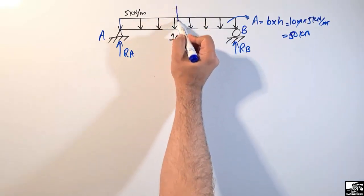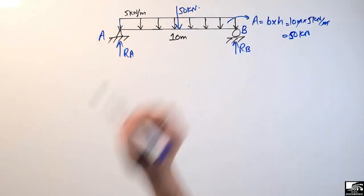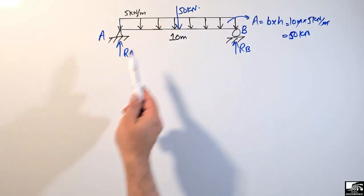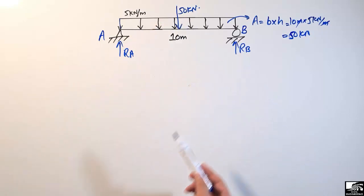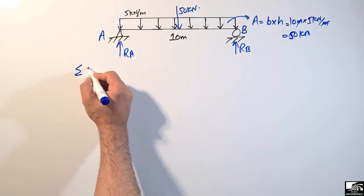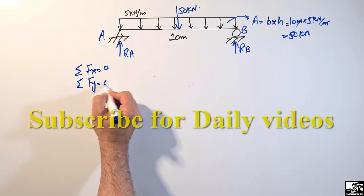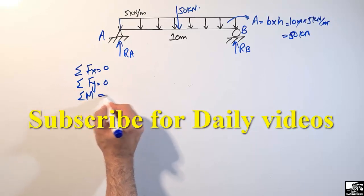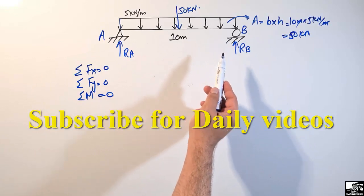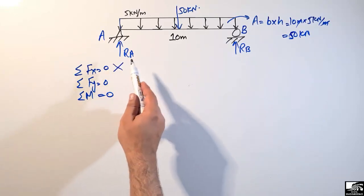The 50 kilonewton point load acts at the center of the beam. Now we can find the support reactions using equilibrium equations: summation of Fx equals zero, summation of Fy equals zero, and summation of moments equals zero. Since there is no horizontal load, we cannot use the Fx equation.